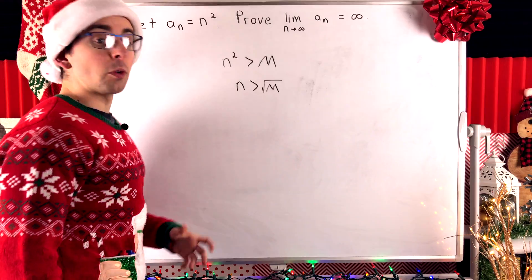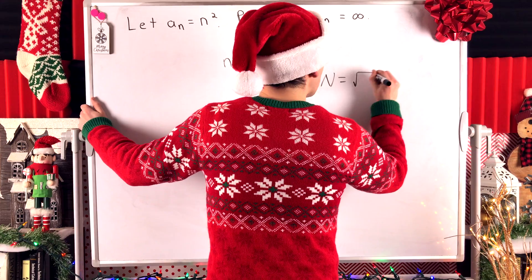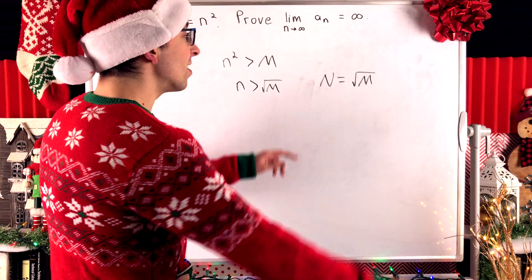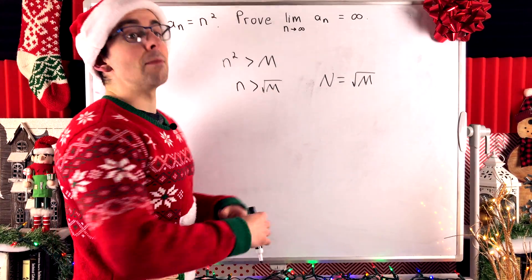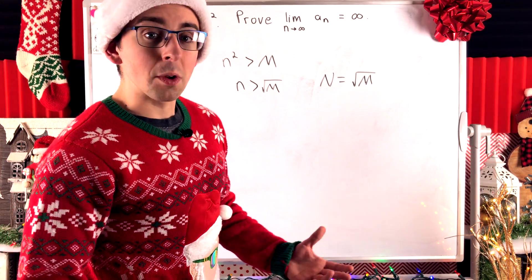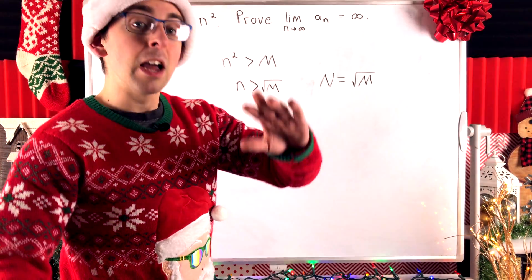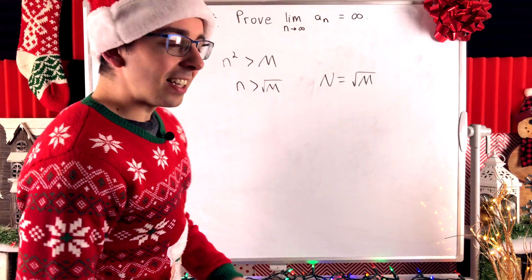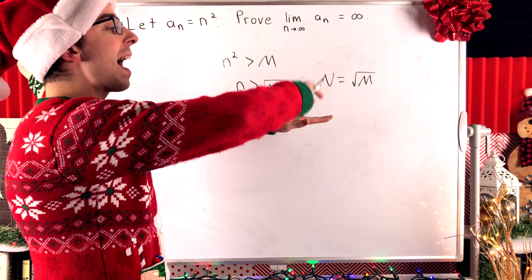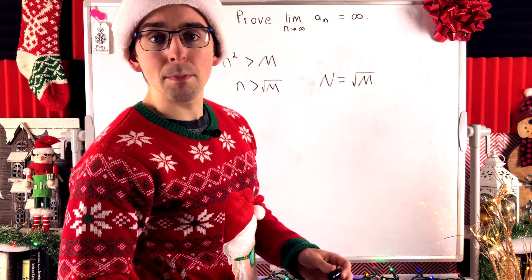This is the scratch work we do for our proof. Then in the proof, we'll say let big N equal the square root of our arbitrary positive real number. Then we'll consider terms of our sequence after the big Nth term, and the proof will follow straightforwardly. We'll show that all terms after this point are in fact greater than m. The idea of this definition is that given any positive real number m, at some point our sequence passes that number and stays past it — that's what it means for the sequence to diverge to positive infinity.